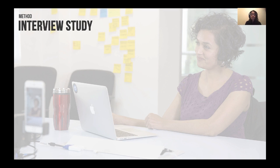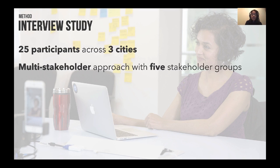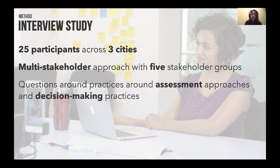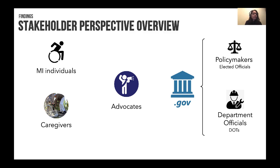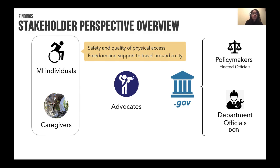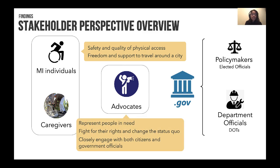To study these, we did an interview study with 25 participants across three cities, where we interviewed five stakeholder groups and asked them questions around assessment approaches and decision-making practices around accessibility. Our stakeholders included mobility-impaired individuals and caregivers, accessibility advocates, and government officials such as policy makers and department officials. Each had their own perspectives. Mobility-impaired individuals cared more about safety and quality of physical access. They represented people in need, fought for their needs and rights, and closely interacted with both citizens and the government.